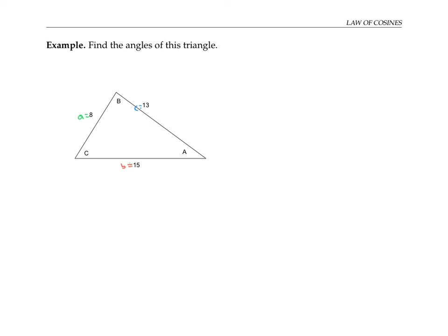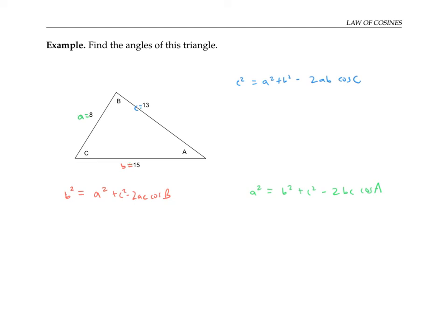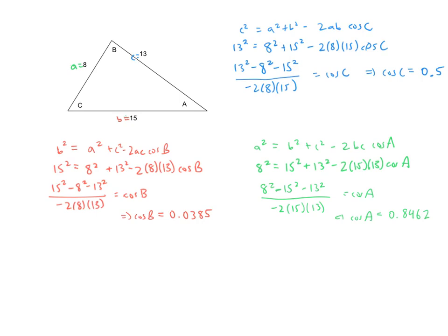In the previous example, we were given two sides and the angle between them. In this example, we're given instead three side lengths and we need to find all three angles. Although there are a lot of computations involved, the ideas are the same as in the previous problem. To find angle C, we need the form of the law of cosines that has cosine of C on the right side. To find angle B, we need the form that has cosine of B on the right side and little b on the left side: b squared equals a squared plus c squared minus 2ac cosine B. And to find angle A, we need little a squared on the left side so that we get cosine of angle A on the right side. For each of these three equations, I'll plug in the side lengths, solve for the cosine of the angle, and use inverse cosine to find my angles.